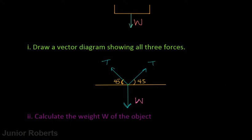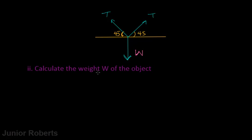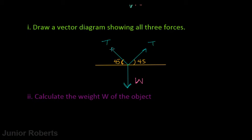Now the next thing the question wants us to do is calculate the weight W of the object. Looking at our vector diagram, we have three vectors acting. We can apply vector addition to solve for these. The two tension vectors form a right angle between them — because angles on a straight line add up to 180 degrees, and 45 plus 45 equals 90 — so the angle between the two tensions is 90 degrees. We can find a resultant for these two vectors.